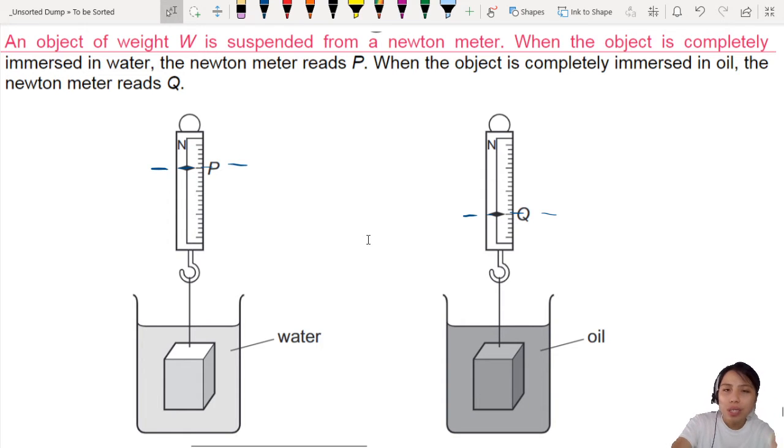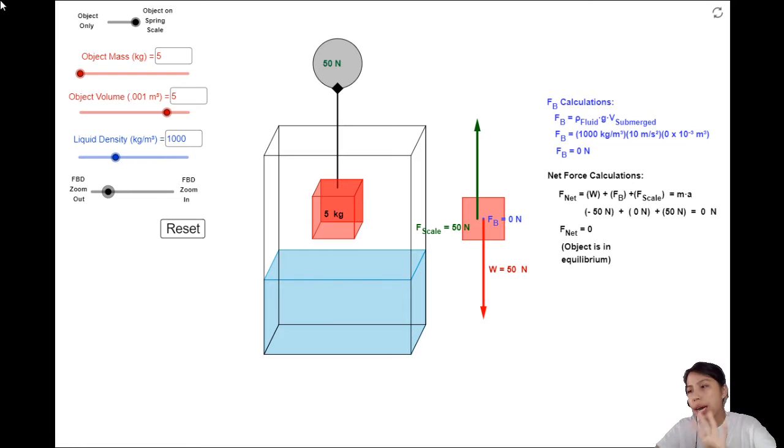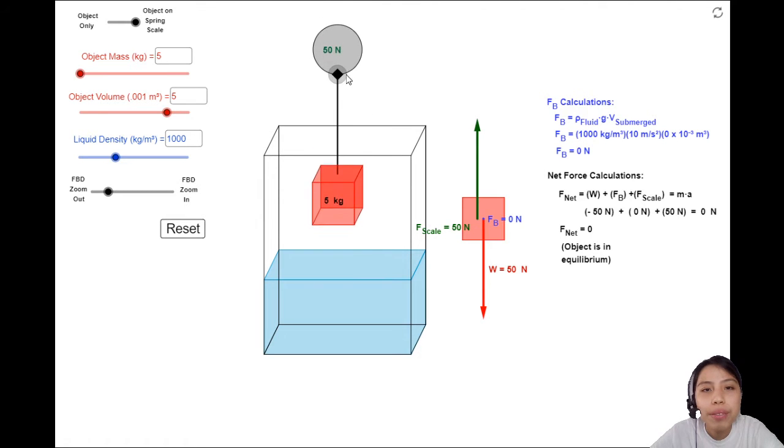Before I go into the details, I'll show you a very quick simulation of this situation. This grey colour thing is a scale, so I can move it around everywhere. Notice how the scale always reads 50 Newton, which is the weight of this object. Because the scale reading, which is the upwards tension force on the block, is equal to the downward weight of the block.